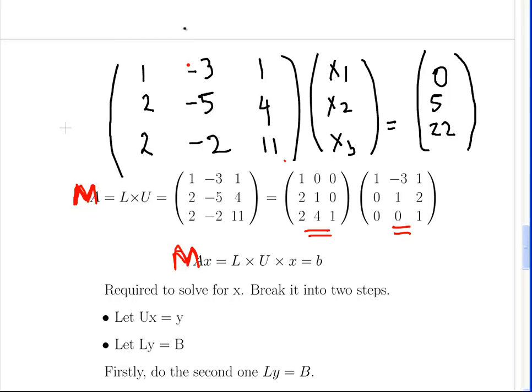What I have here is the matrix, I previously called it A, but now I just changed the name to M. I have this vector here, x1, x2, x3, and we have solution values there, 0, 5 and 22.